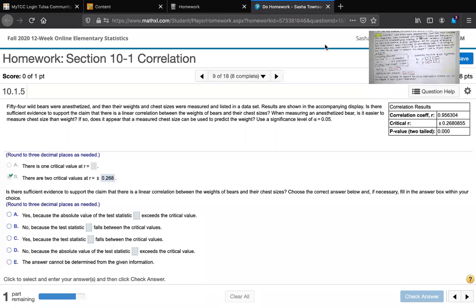Then the next thing we're asked is, is there sufficient evidence to support the claim that there is a linear correlation between the weights of bears and their test sizes? Choose the correct answer below, and if necessary, fill in the answer box within your choice. We're also asked to round to three decimal places. So if we're trying to decide if there's sufficient evidence to support the claim, we just have to compare the absolute value of our correlation coefficient r to the absolute value of those critical values.